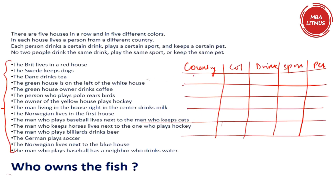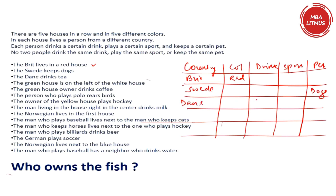Now let us see what we take away from the rules. The Brit lives in the red house, so we write that down. The Swede keeps dogs — Swede and dogs is a combination. The Dane drinks tea — Dane and tea is a combination, we have written it.